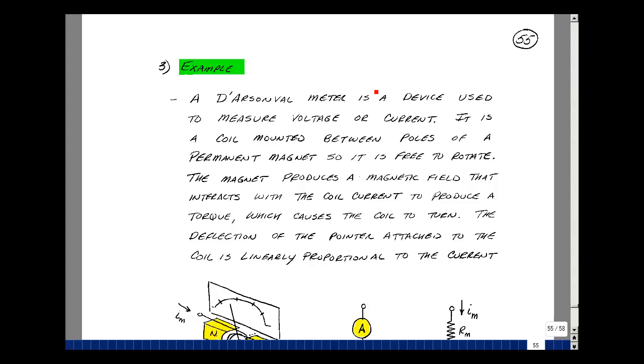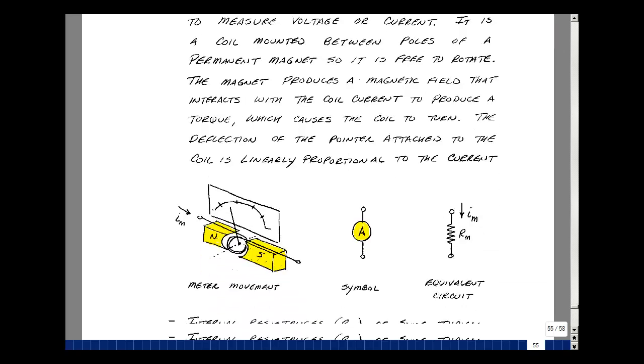This lesson deals with an ammeter, a voltmeter, and a Wheatstone bridge. You can find these notes in the ECE 201 ebook in chapter 2 starting with page 55.